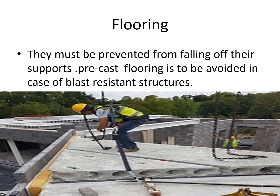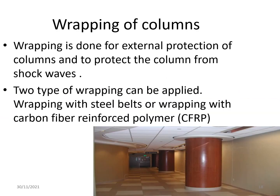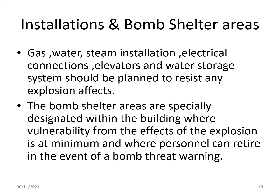Flooring must be prevented from falling off its supports; precast flooring is to be avoided in blast resistance structures. Wrapping of columns is done for external protection and to protect columns from shock waves. Two types of wrapping can be applied: wrapping with a steel belt, or wrapping with carbon fiber reinforced polymer (CFRP).